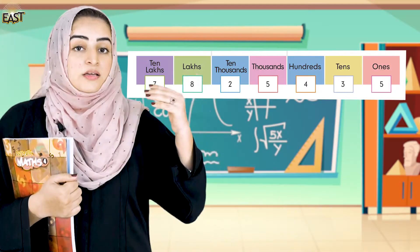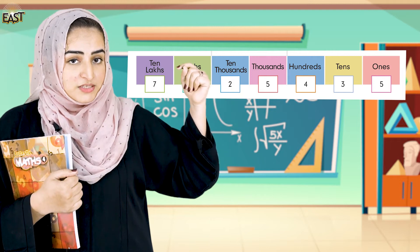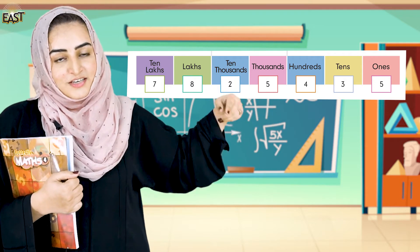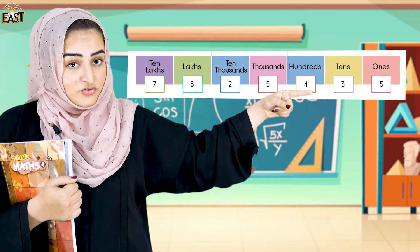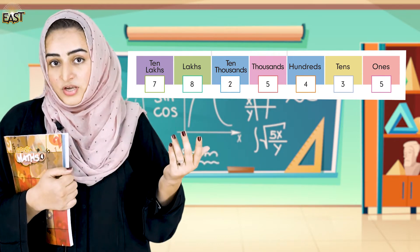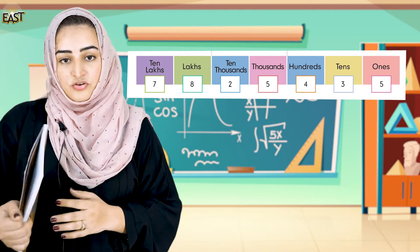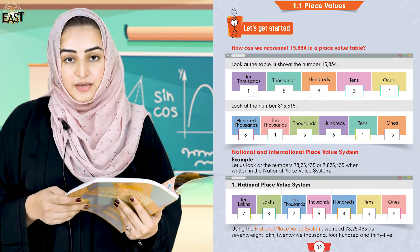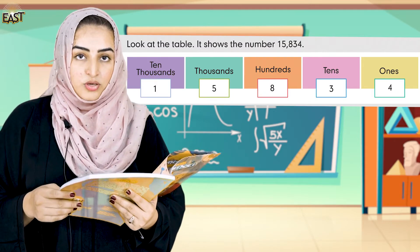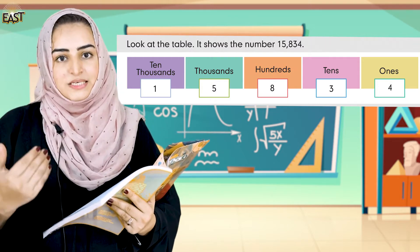Do you already know that? The national place value system — how can we put our number in it? You have to open your books to page 2 and see the examples: 1, 5, 8, 3, and 4. How can we put all these numbers in it?